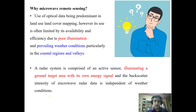Why do we need microwave remote sensing? In optical remote sensing, where we normally use visible and infrared wavelengths for capturing images, there are problems of cloud cover and poor illumination when the sun is absent. Clouds are particularly prevalent in coastal regions and valleys, where during the rainy season you often cannot get a cloud-free image and cannot see anything on the ground.